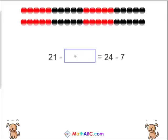21 minus something equals 24 minus 7. Okay, bigger number here. Let's count to 24. 5, 10, 15, 20, 21, 22, 23, 24. And now we cross off 7.